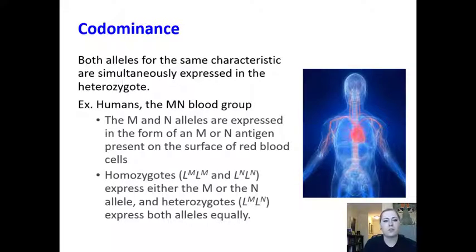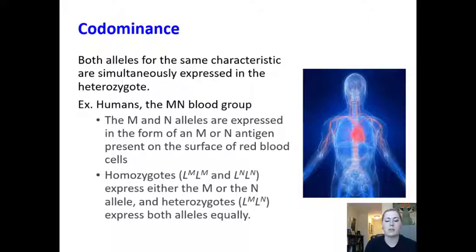Another variation is codominance, where both alleles for the same characteristic are simultaneously expressed in the heterozygote — both alleles retain some form of expression. An example in humans is the MN blood group, where the M and N alleles are both expressed as an MN antigen on the surface of red blood cells. Homozygous individuals express either the M or N allele, while heterozygous individuals express both alleles equally.